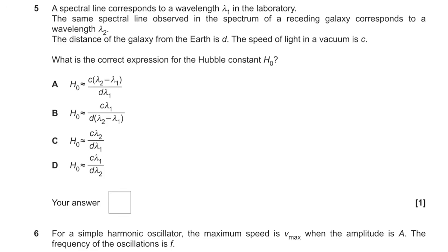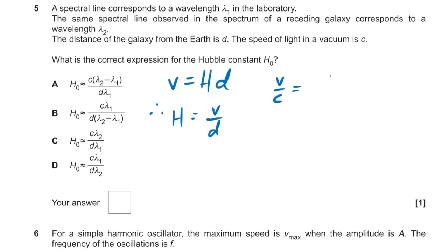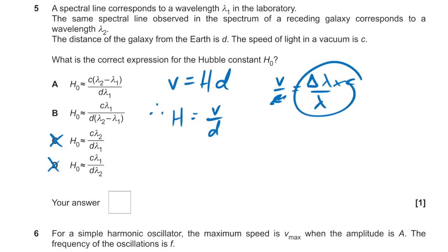Question 5: a spectral line at wavelength λ₁ is observed as λ₂ from a galaxy moving away. What is the correct expression for the Hubble constant H₀? We know the Hubble equation is v = H₀d, so H₀ = v/d. Using the Doppler shift: v/c = Δλ/λ. We need Δλ (λ₁ minus λ₂), so it can't be C or D. Combining everything, H₀ = (Δλ × c) / (λ × d), so the answer is A.